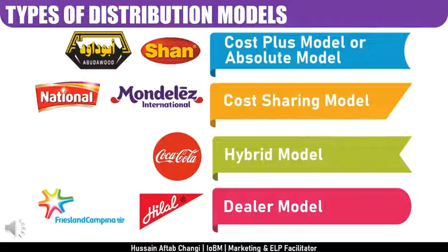In the Dealer model, the distributor qualifies for incentives by fulfilling these shared KPIs. When you align your business partner's KPIs with your own business philosophy, the partner and the principal work together toward the same goal, the same direction, and the same attainment. This creates a stronger relationship because both parties speak the same language and operate on the same page — a brilliant culture to cultivate.